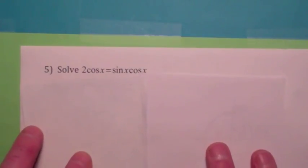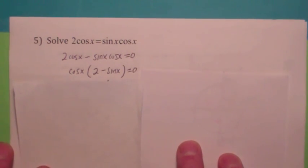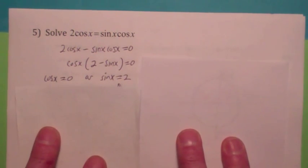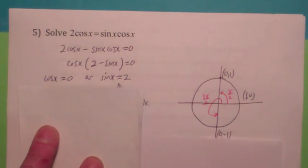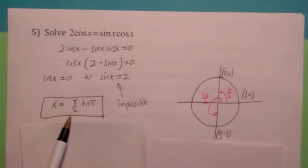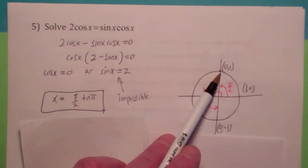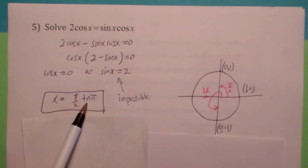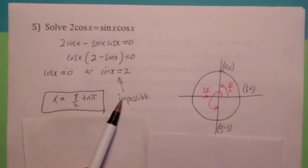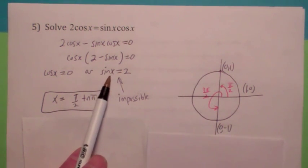Let's do more examples. In this one, what's helpful is to get zero on one side and factor — we're using the principle of zero products. When does the product of two things equal zero? When either the first one equals zero or the second one equals zero. Where is cosine of x equal to zero? That's whenever the x-coordinate is zero, so there's one at pi over 2 and another at 3 pi over 2. Going pi over 2 as your base angle, you can add integer multiples of pi — that represents all the angles. Now where is sine of x equal to 2? You should recognize that's impossible; this type of equation is a contradiction, so some equations have no solutions.